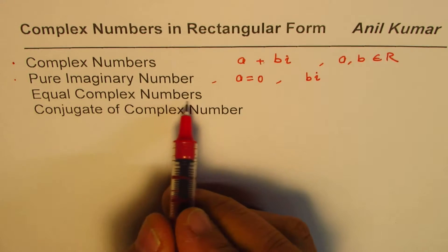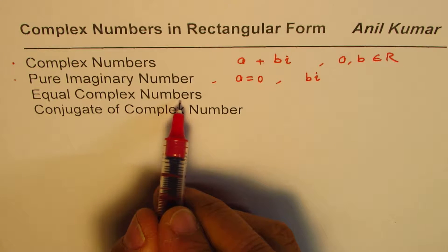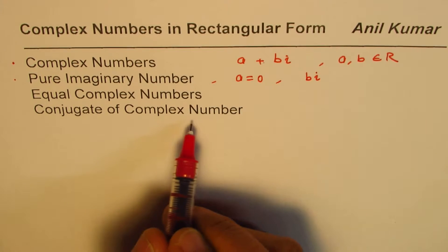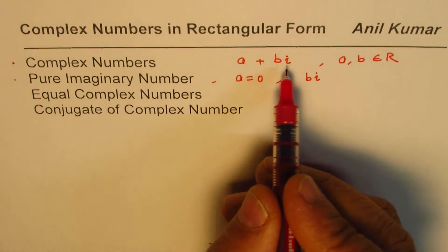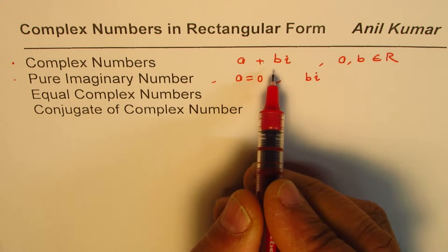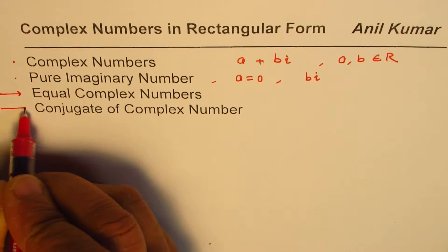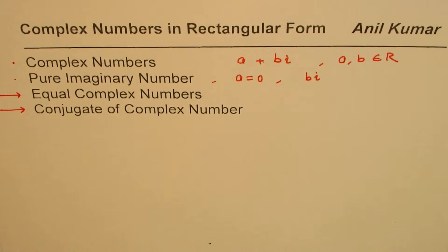Then the complex numbers are equal. And the conjugate of complex numbers are those where the sign of the imaginary part is reversed. We'll actually elaborate on these two points in this particular video.